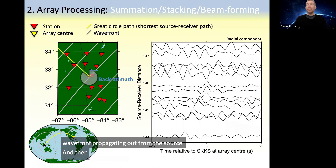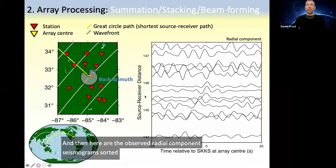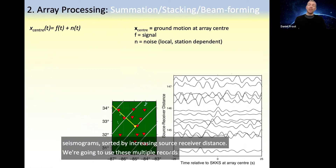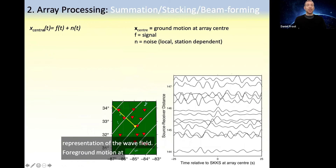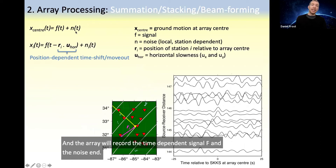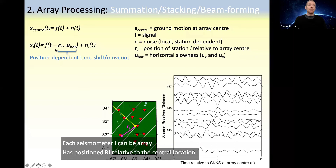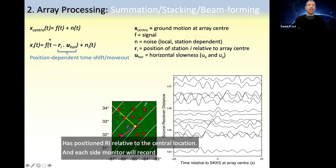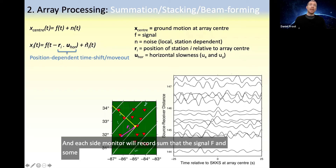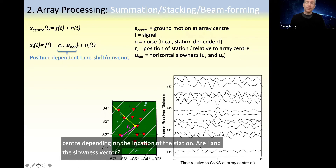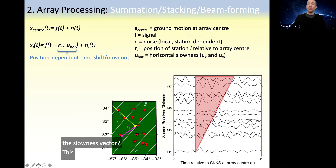Here are the observed radial component seismograms sorted by increasing source-receiver distance. We're going to use these multiple records to construct a representation of the wave field, or ground motion, at the array's central location. The array will record the time-dependent signal F and the noise N. Each seismometer i in the array has position Ri relative to the central location, and each seismometer will record the signal F and some local station-dependent noise Ni. But the signal will have a time shift relative to the center, depending on the location of the station Ri and the slowness vector. This time shift is what gives us the moveout of the signal across the array.